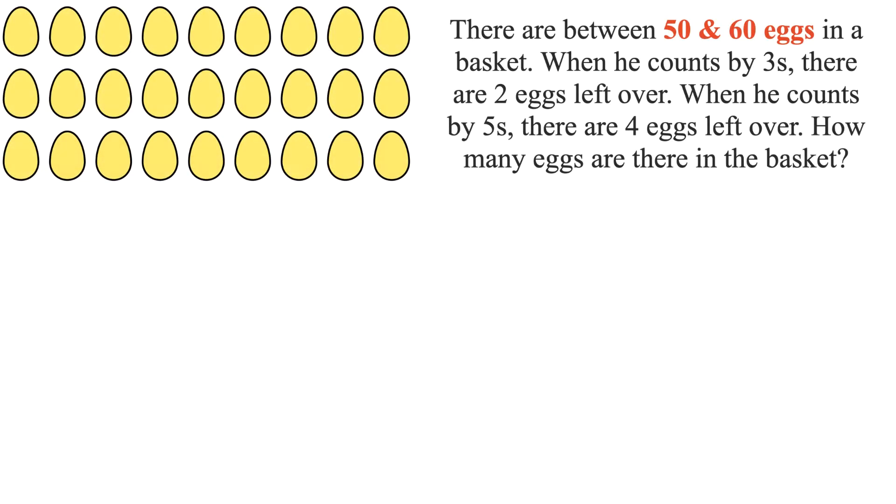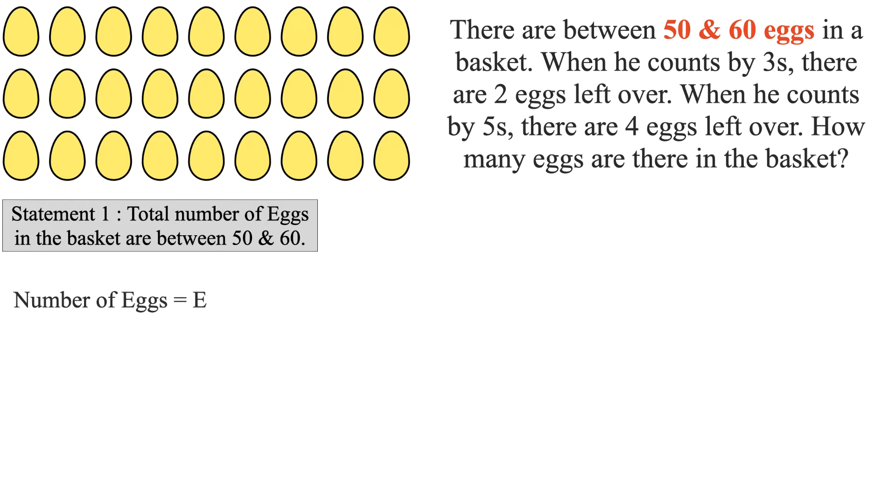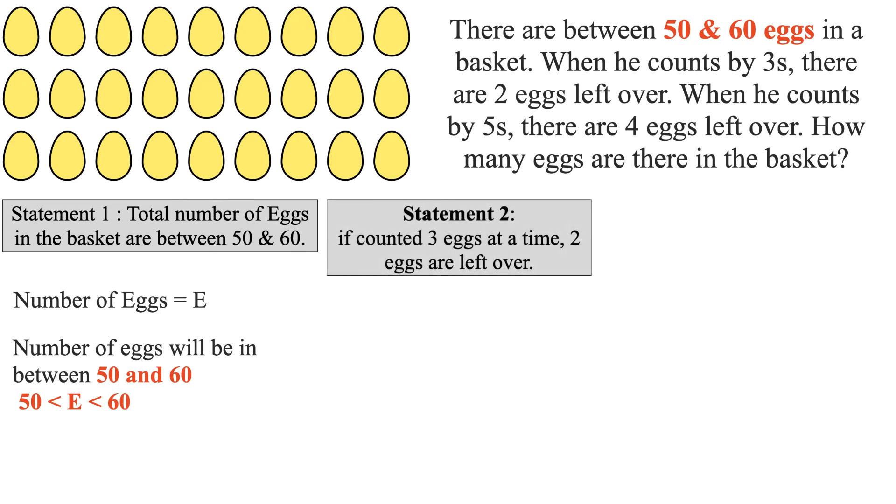This problem can be solved by conveniently dividing the problem into three statements. In Statement 1, given that the total number of eggs in the basket are between 50 and 60. Let's say number of eggs equals E. So based on first statement, number of eggs will be in between 50 and 60.